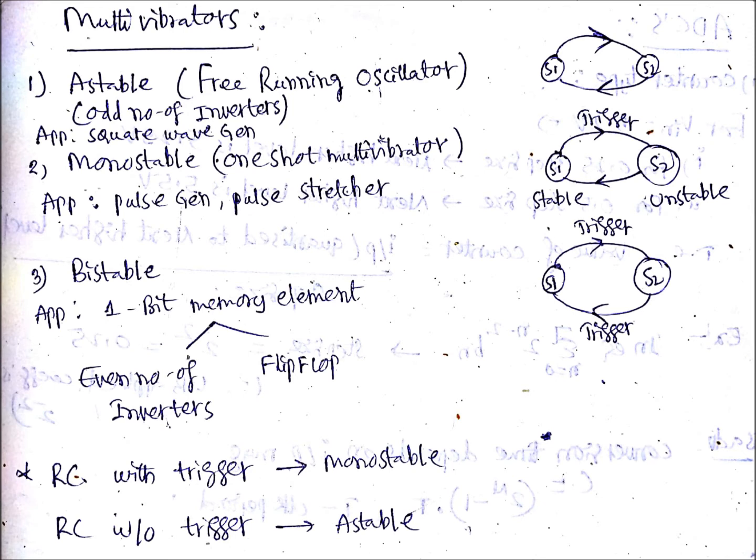Coming to bistable, the name itself says both states are stable. To make any stable state into unstable state you need a trigger pulse. Here S1 is stable, so for making that to S2 you are giving a trigger pulse. Again S2 is also stable because it is bistable, so again for making that to another state S1, you need one more trigger unlike monostable. Here you need two trigger pulses.